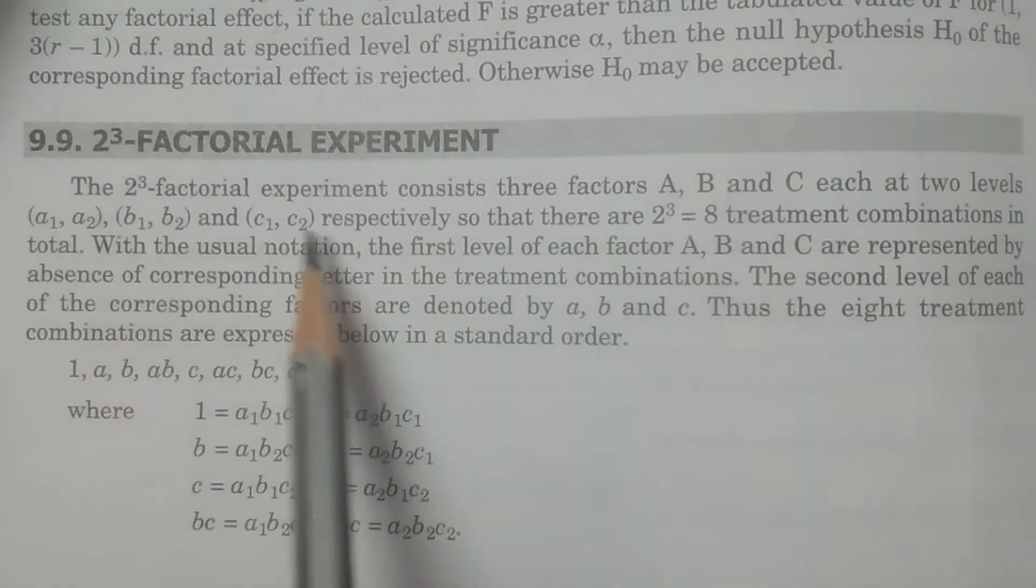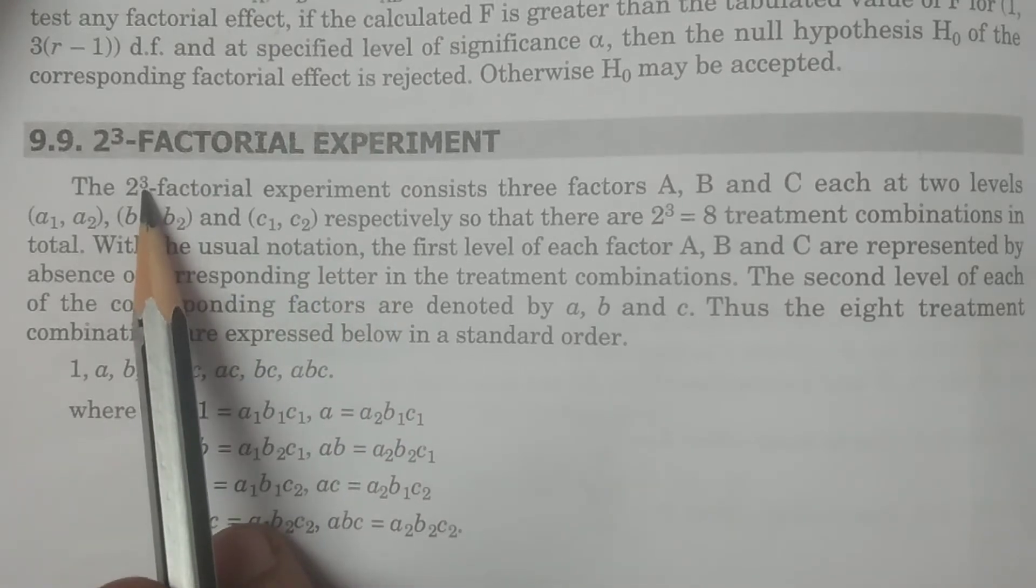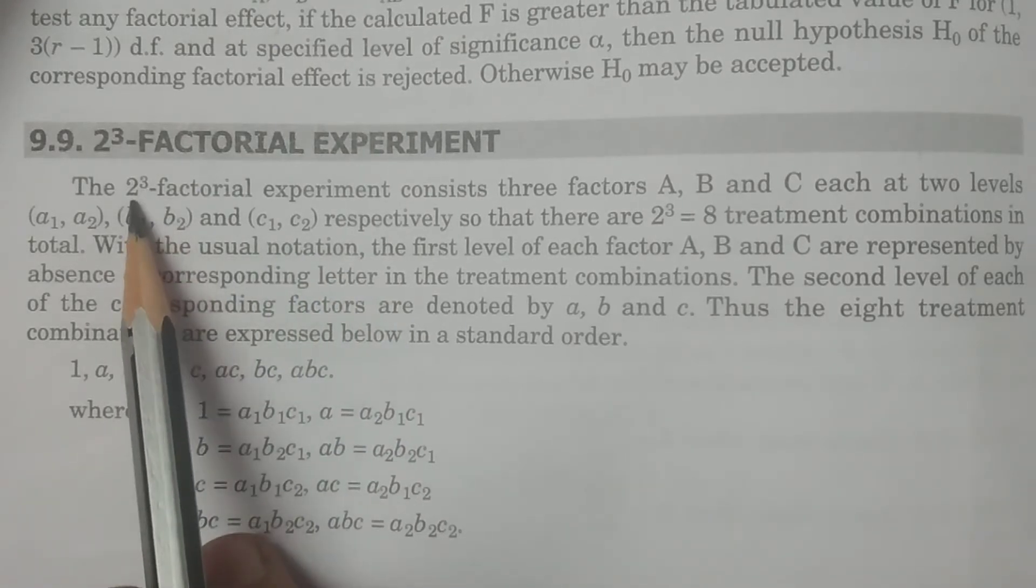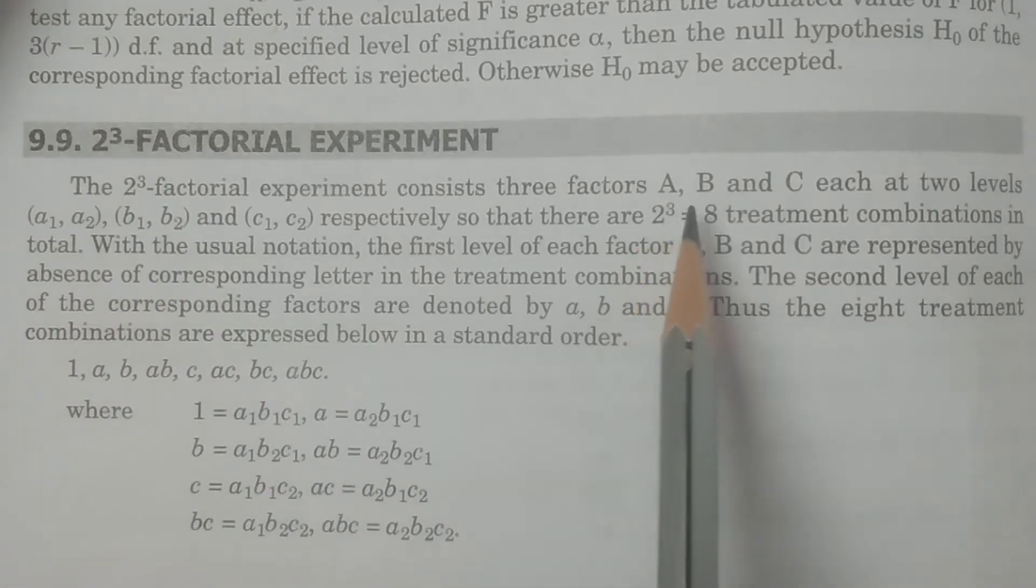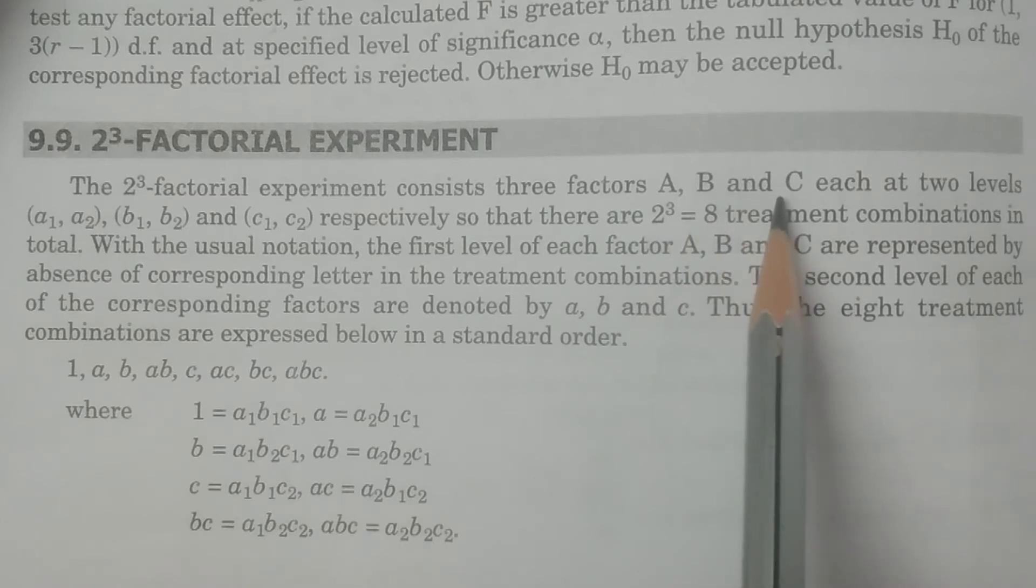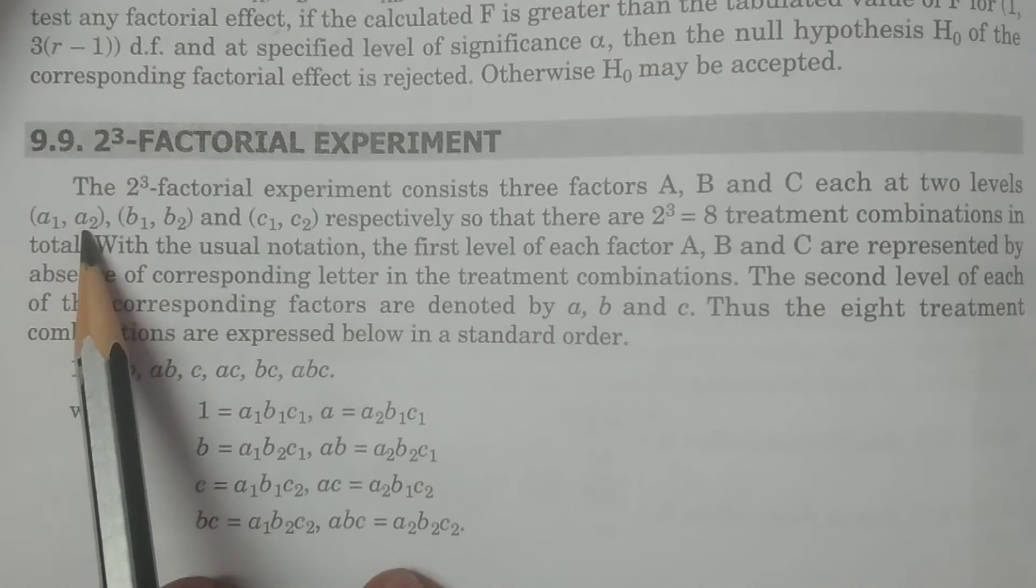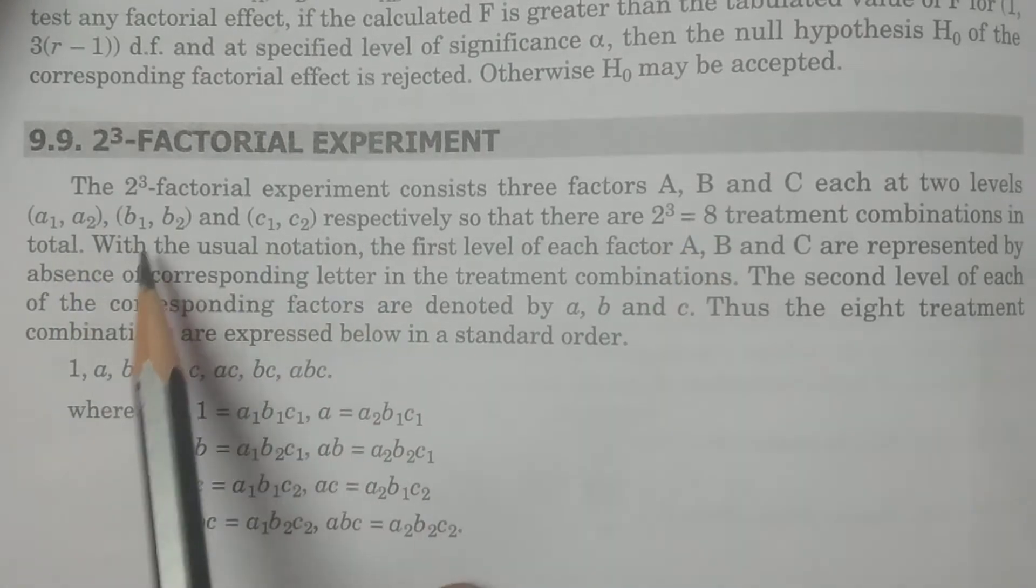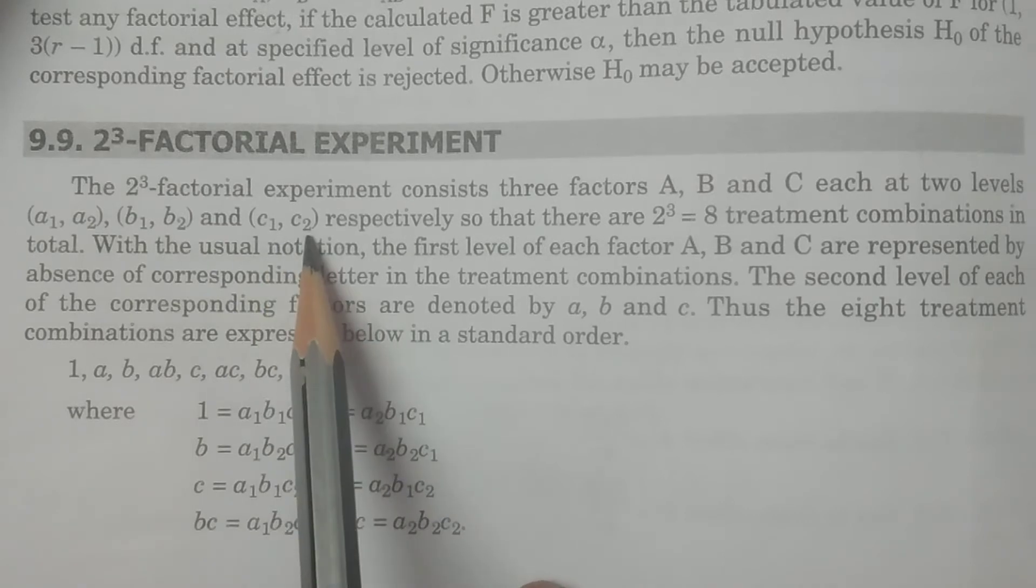The 2 cube factorial experiment means 3 represents 3 factors, 2 represents 2 levels. So that is 3 factors. Let us consider A, B and C, each at 2 levels. That is, A is at 2 levels A1, A2. B at 2 levels B1, B2. C at 2 levels again C1, C2, respectively.